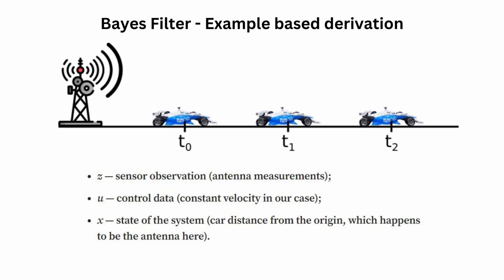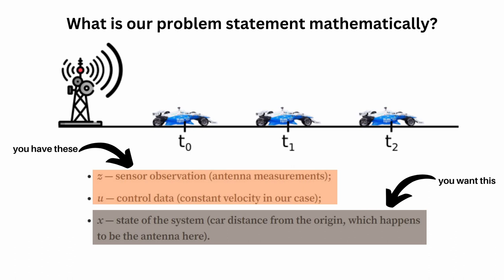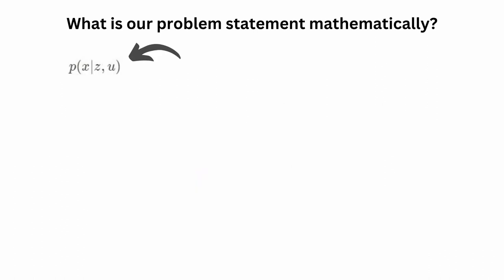Now we have variables Z, U, and X. It is time to explain how these variables are related to each other in the world of probability. Since we know the sensor observation Z and the control data U, only the state of the system X is unknown. That is our problem statement. We want to understand the value of X at every time instance because X denotes the position of the car. We ask ourselves: what is the state of the system X given the sensor observation Z and the control data U?